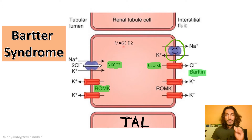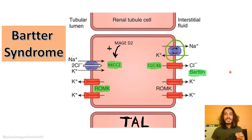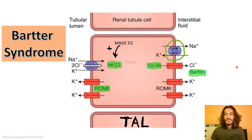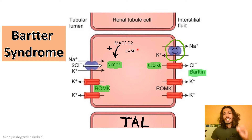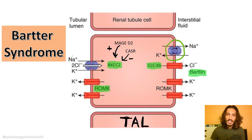To understand a few newer varieties of Bartter syndrome that have been discovered, know something called MAGED2, which helps in activating the sodium-potassium-2-chloride channels. We also have the CaSR, that is the calcium-sensing receptor, which inhibits the sodium-potassium-2-chloride channel. Just keep these two in mind.